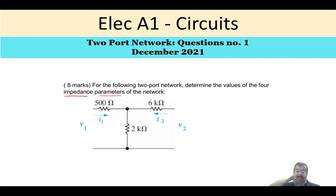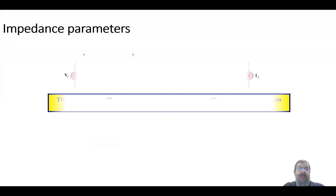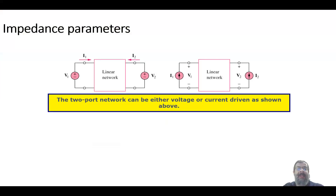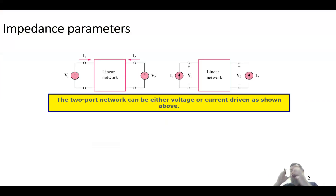Let me give you a bit of theory on what we mean by the two-port network. I have a couple of slides to explain this. Regarding the impedance parameters: basically, your circuit or network — we look at it as a black box.